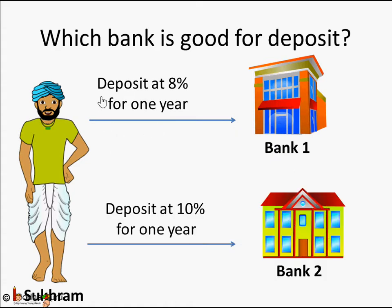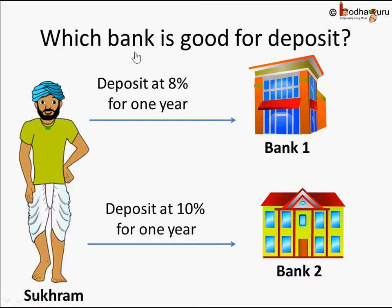Sukram says he wants to deposit 10,000 rupees. Bank 1 says they will give 8% rate for the fixed deposit; Bank 2 says 10%. Which one should Sukram use? When you deposit money, your goal is to get more interest back from the bank so your money increases. When you are taking a loan, your goal is the reverse — you look for the bank where you have to repay less.